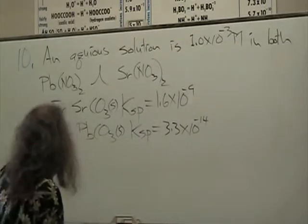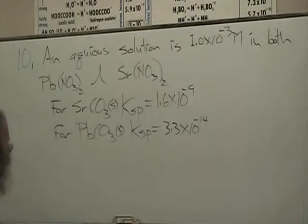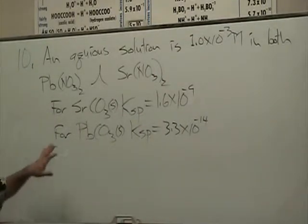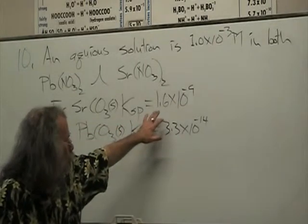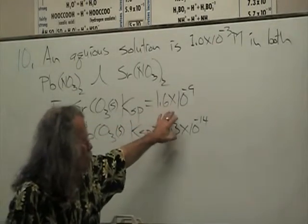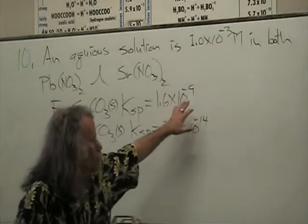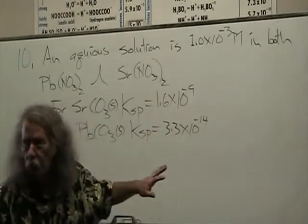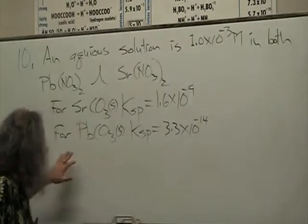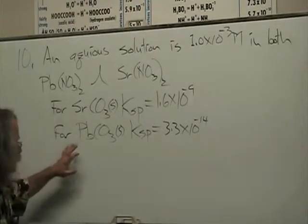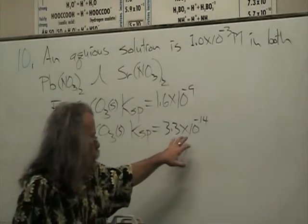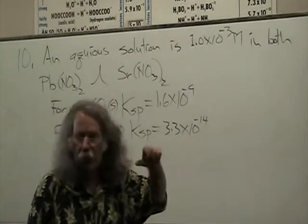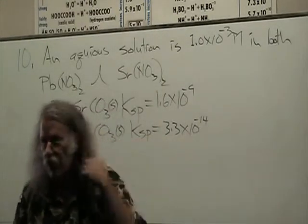I'm also given the information that strontium carbonate has a KSP of 1.6 times 10 to the minus 9, and lead carbonate has a KSP of 3.3 times 10 to the minus 14.